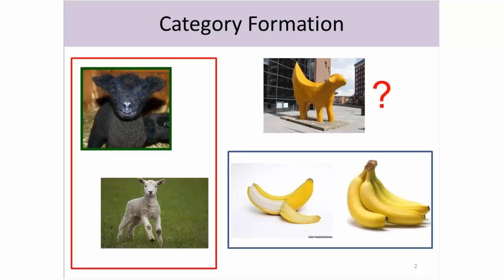The idea here is that you wouldn't have had the red and the blue boxes, but if I've got a group of lambs and I can define the properties of lambs, and I get another lamb, I can make a prediction about what that lamb is going to be. You would know you could define a lamb by shape, size, whatever — get another one of those, and you can use those properties to predict its properties.